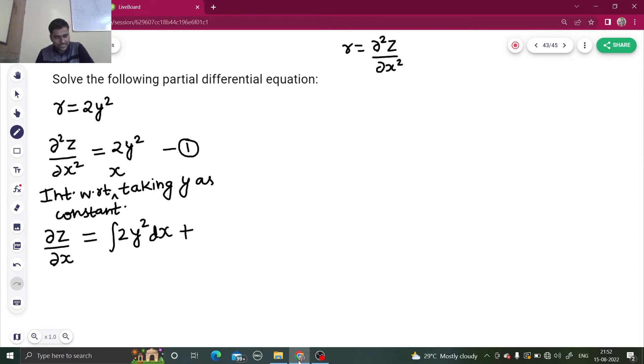That will be integral of 2y squared. Integration with respect to x we are doing. Keep it in mind. 2y squared dx. Now because a constant will come, we don't write that here c. We write because y is treated as constant, that constant we write in terms of y. 2y squared will come out because we have treated y as constant. So del z by del x will be 2y squared integral dx plus g1y. Now integration of dx is simply x. So in next step we can write del z by del x equal to 2xy squared plus g1y.